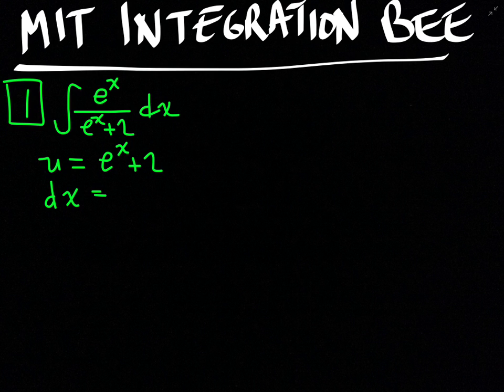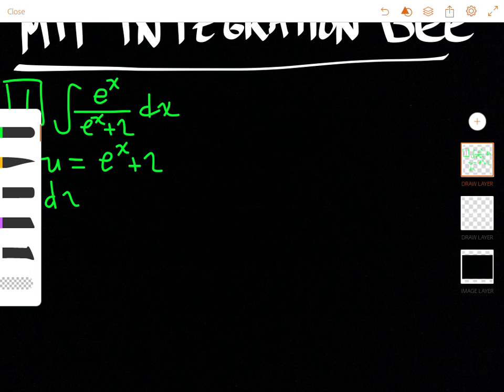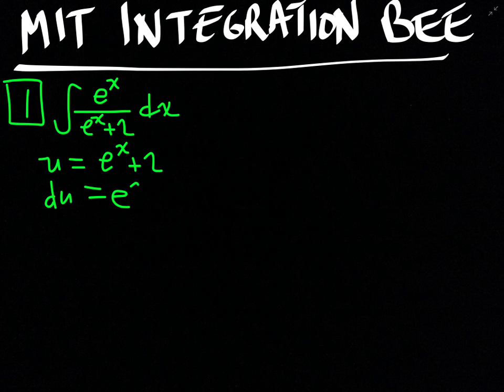We know that because 2 is a constant and the derivative of e^x is just e^x, I can take the derivative of u: du will just be e^x dx, and that is the numerator.